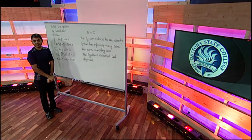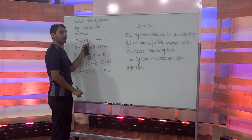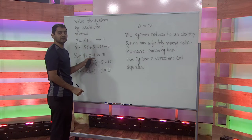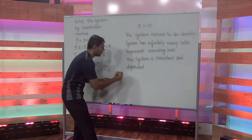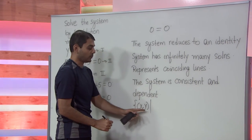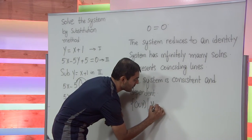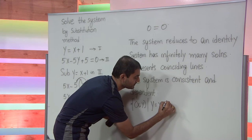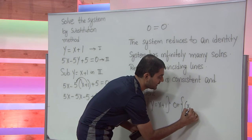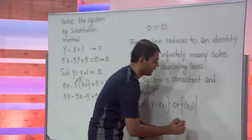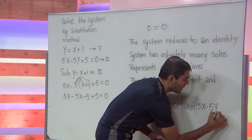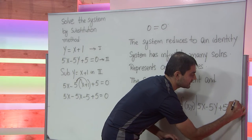The solution for this system can be represented by any one of the lines, because both equations represent the same line. Hence, the solution is represented as {(x, y) such that y equals x plus 1} or {(x, y) such that 5x minus 5y plus 5 equals 0}.